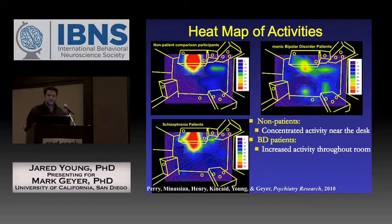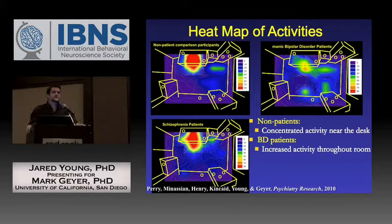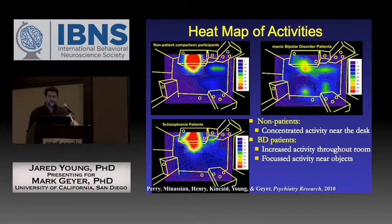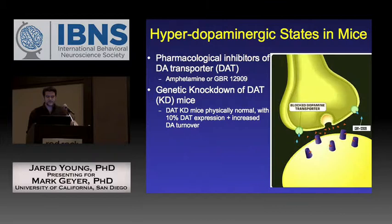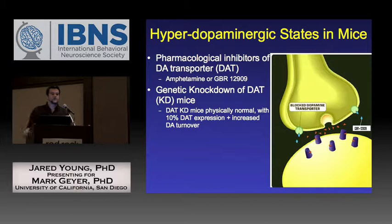Heat maps of activity confirm that healthy subjects spend most time near the desk, bipolar patients move diffusely and spend more time near objects, while schizophrenia patients show moderate activity more like healthy subjects. This gives a signature pattern of how subjects explore a novel room based on their internal drive — not instruction. The question becomes: how do we recreate or understand the mechanisms underlying that drive?